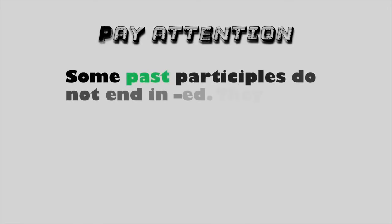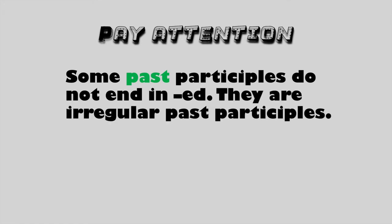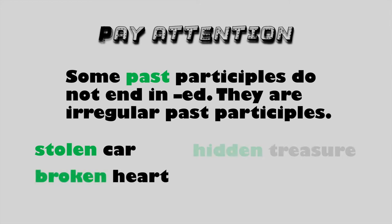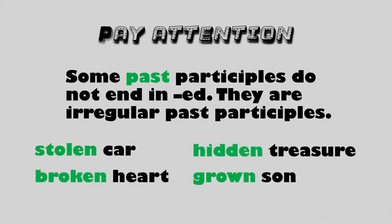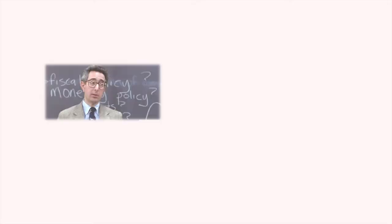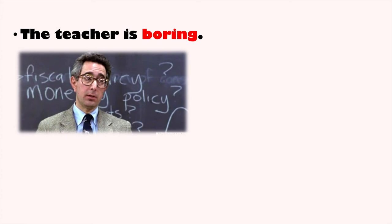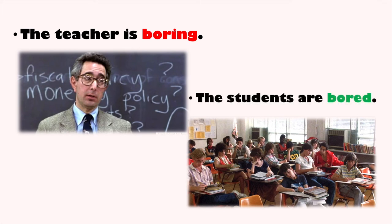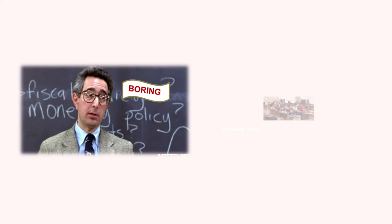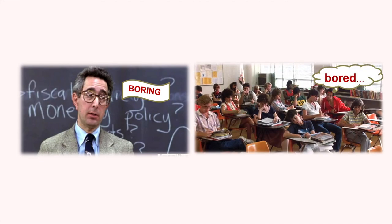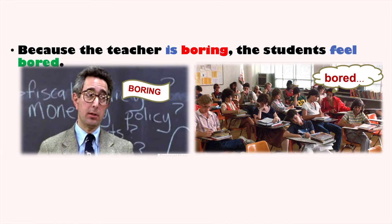Pay attention, though — some past participles do not end in -ED. There are irregular past participles. For example: a stolen car, a broken heart, hidden treasure. Let's look at another example: the teacher is boring, and the students are bored. Look at them — they're sleeping, they're yawning. They're bored because the teacher is boring.